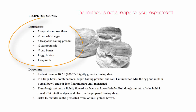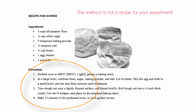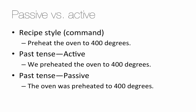In the recipe, we have a list of ingredients and we have directions. The first one says 'preheat oven to 400 degrees.' This kind of grammar is not used in the Methods section. The recipe style uses a command style — it would say 'preheat the oven to 400 degrees,' starting with a verb at the beginning, like 'sit down.' In a more academic style, you would change that to a full sentence with past tense. Instead of saying 'preheat the oven,' you could say 'we preheated the oven to 400 degrees.'